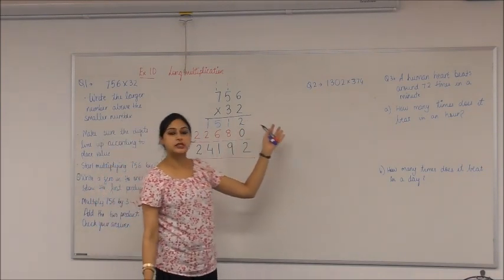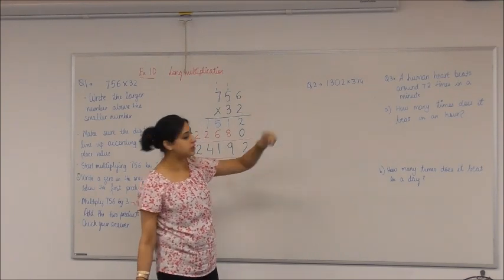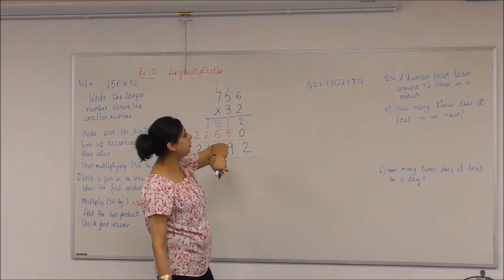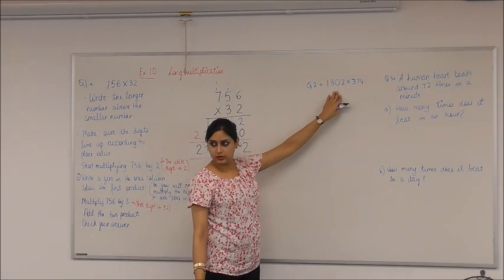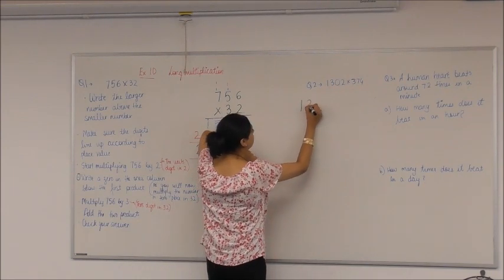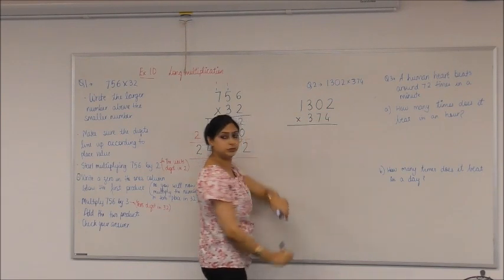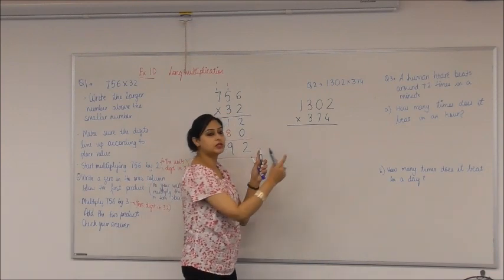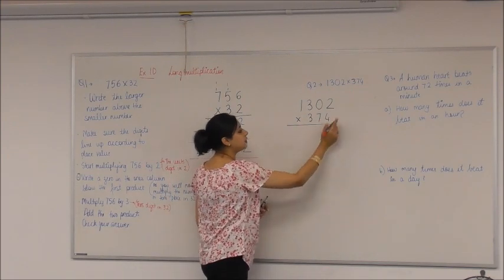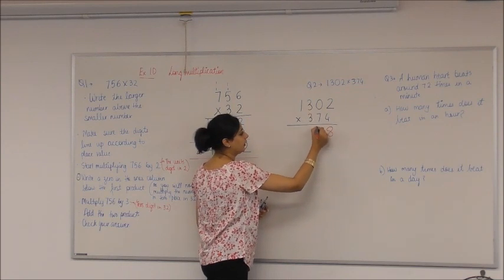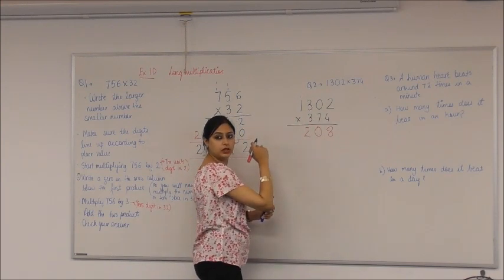So another example. We're going to repeat the same steps and then we'll do a problem solving, like a worded question where we'll apply our knowledge that we've learned today. So 1302 times 374. Which one's the bigger number? I'll write it apart. So 1302 times. See, I've lined up my digits according to place value. It is important. Which direction do we start? I start from the units or the hundreds? Units. So let's times 1302 by 4 first. 4 times 2 is 8. 4 times 0 is 0. 4 times 3? 12. What happens to the 1? Carry. 4 times 1? 4. Plus the 1? 5. Well done.